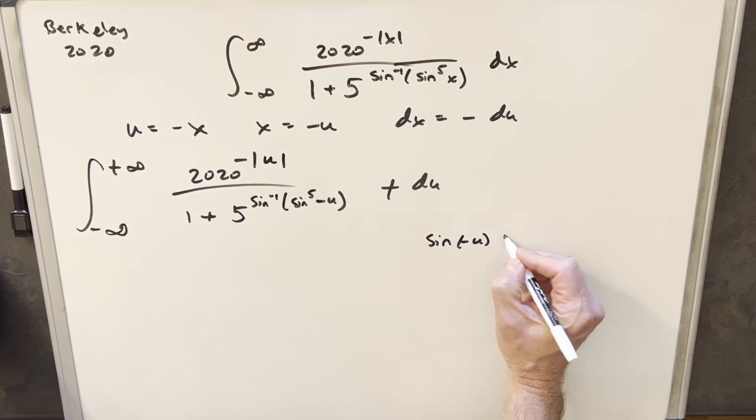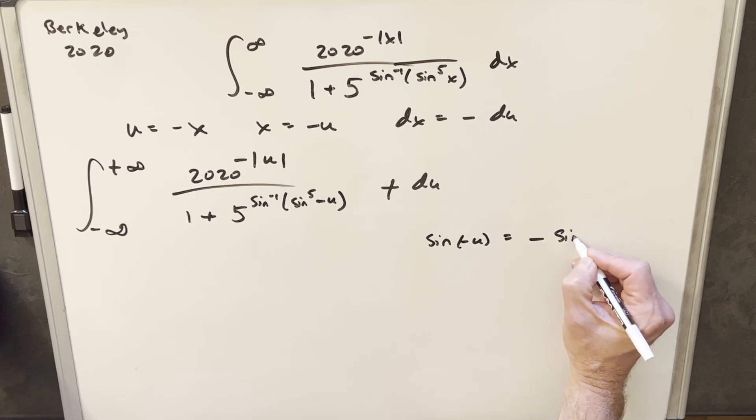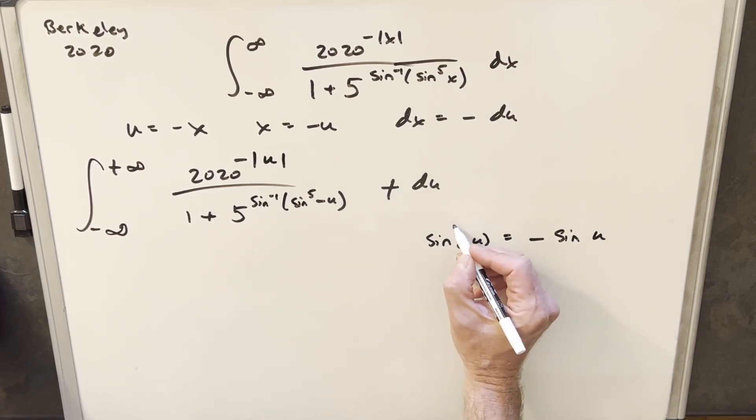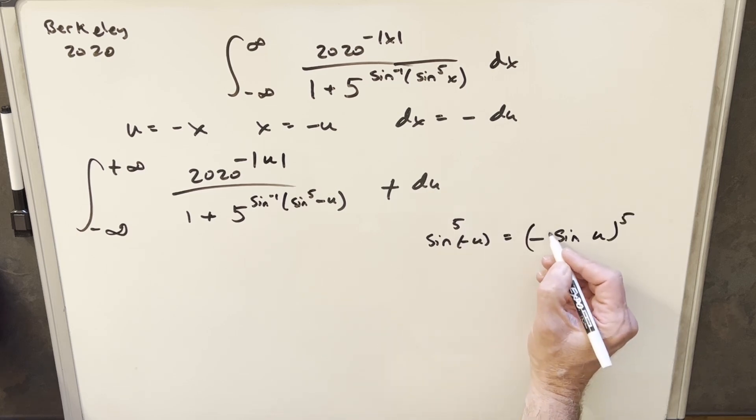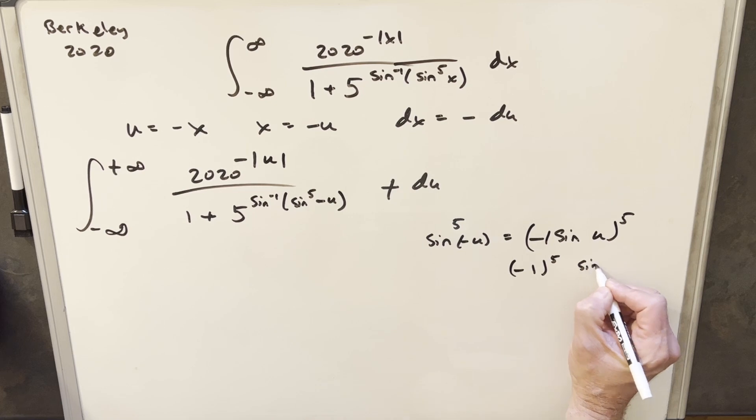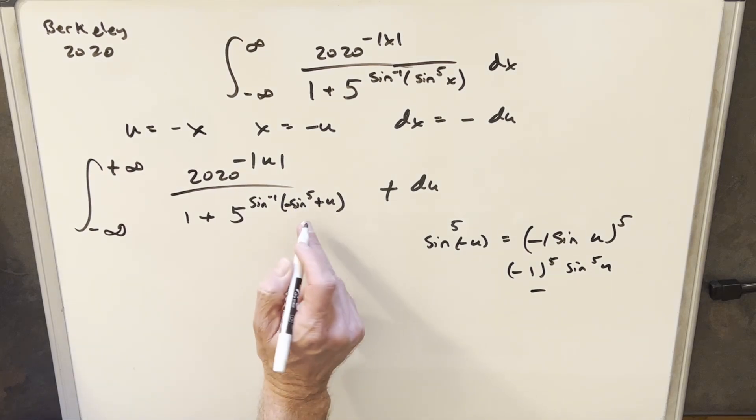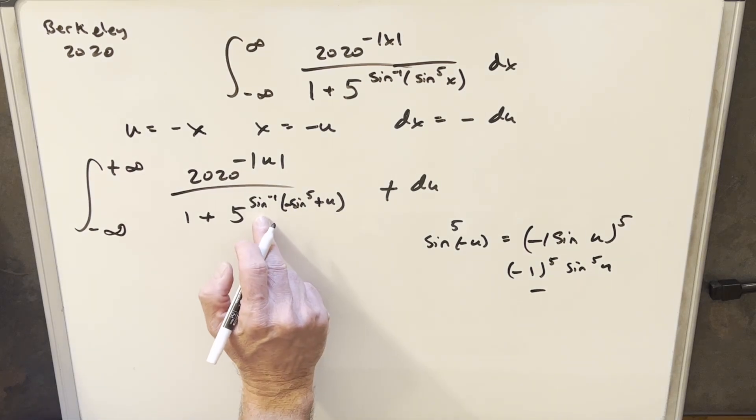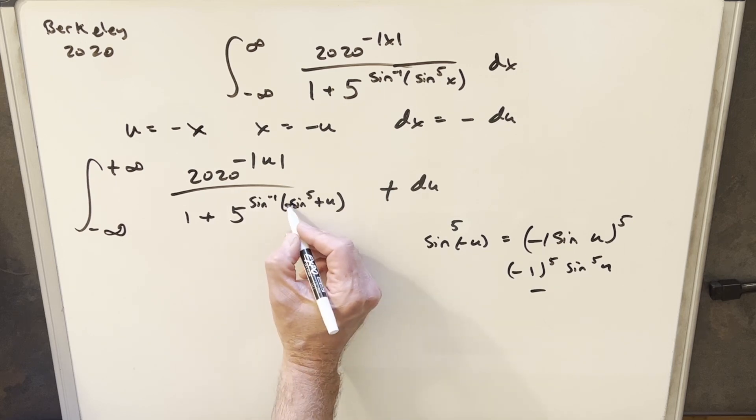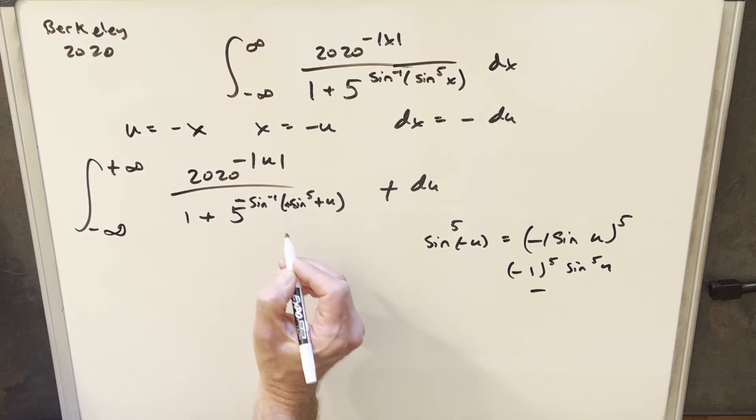Now with this minus sign here, sine is an odd function. So if we have sine minus u, that's the same thing as saying minus sine of u. Now in this case, we have it to the 5th power. So we can consider this like, we can split this up as minus 1 to the 5th, sine to the 5th u. But minus 1 to the 5th is just a minus 1. So we can essentially take this minus sign and bring it right here in front of the sine to the 5th. But arc sine is also an odd function. So it turns out we can take our minus sign all the way out front there.